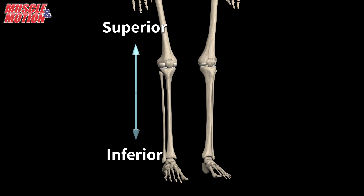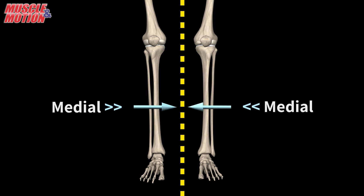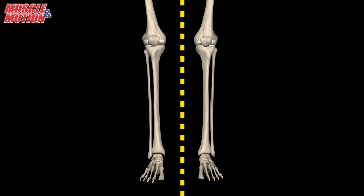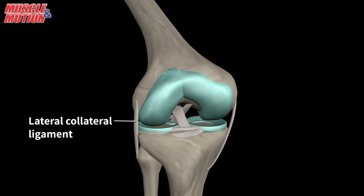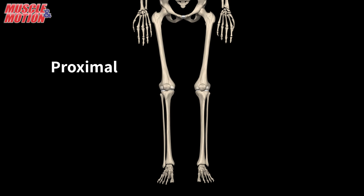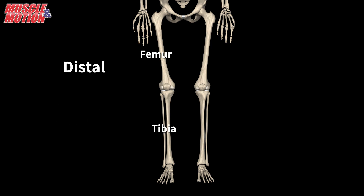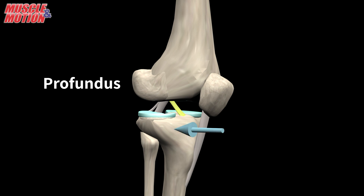Inferior means toward the lower part of a structure, below. Medial means toward or at the midline of the body, inner side — for example, the kneecap is medial to the lateral femoral condyle. Lateral means away from the body's midline, outer side — such as the lateral collateral ligament, which is on the lateral aspect of the knee joint. Proximal means close to the origin or point of reference — for example, the femur is proximal to the tibia. Distal means far from the origin or point of reference. Superficial means near the body surface — for example, the patellar tendon is more superficial than the anterior cruciate ligament. Profundus means deep.